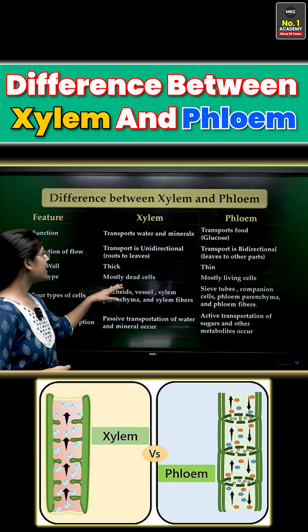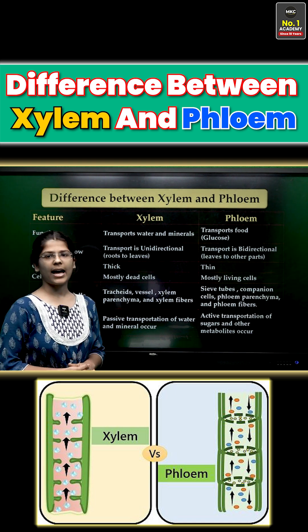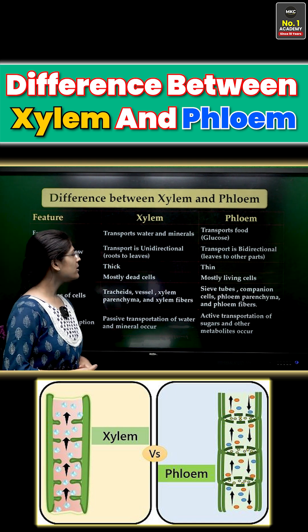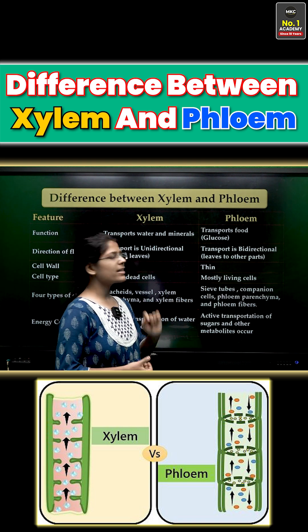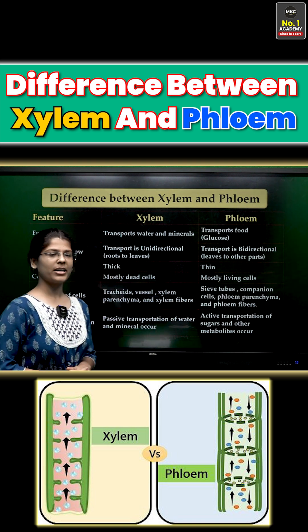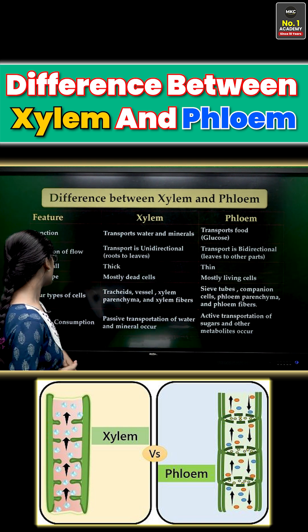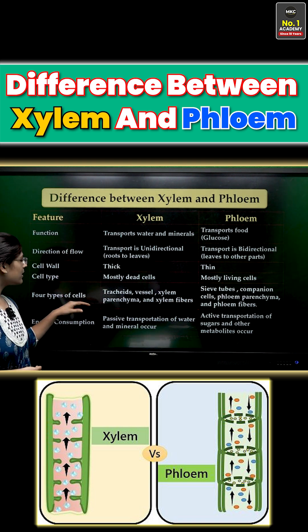Mostly dead cells are found in xylem, and mostly living cells are found in phloem.